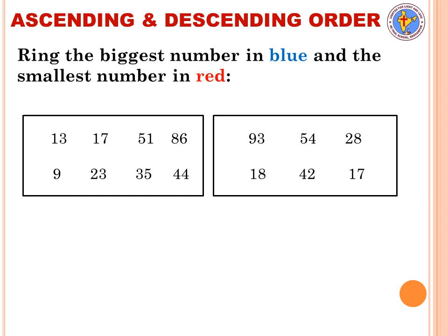In the first box the numbers are 13, 17, 51, 86, 9, 23, 35, and 44. The biggest number here is 86 — you write it in blue color — because in the tens place 8 is the biggest among all the numbers. For the smallest number, circled in red: the rule is that if both two digit numbers and one digit numbers are present, the one digit number is always the smallest. So 9 is the smallest.